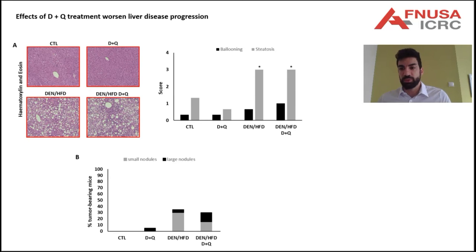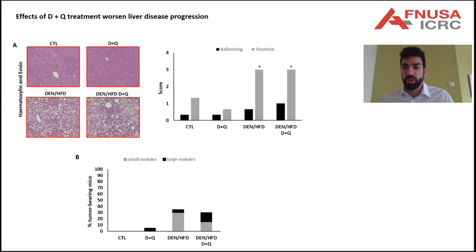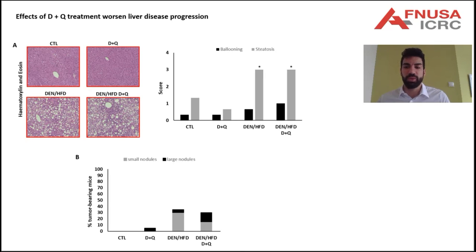Plastic nodules were observed and classified by size as small nodules if smaller than 3 mm and large nodules if bigger than 3 mm. About 35% of the high-fat diet mice and surprisingly 5% of lean mice treated with D plus Q presented nodules, while none were detected in lean controls. Interestingly, whereas the percentage of tumor-bearing mice in the high-fat diet control and treated groups were similar, a difference in small and large nodule ratio was noted, with an increased presence of large nodules in the high-fat diet D plus Q treated group.